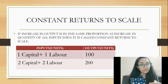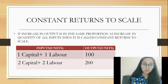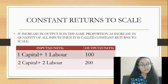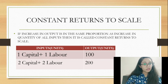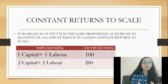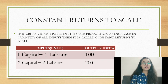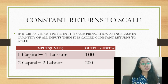Constant returns to scale means the proportionate change in inputs leads to the same proportionate change in output. For example, with 1 capital and 1 labor we get 100 units, and with 2 capital and 2 labor we get 200 units — a fixed proportionate increase in both input and output.